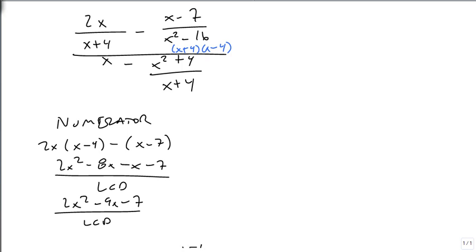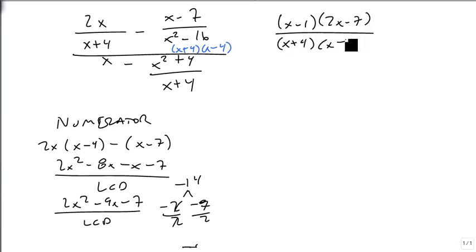2 times minus 7 is minus 14. Factors of minus 14 are minus 2 and minus 7. Those add up to minus 9. So we end up with, divided by 2, x minus 1 times 2x minus 7 over x plus 4 times x minus 4. And that's our numerator.